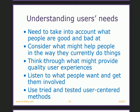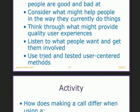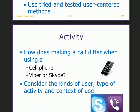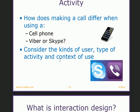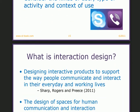Then we have understanding users, and an activity example: how does making a call differ when using a cell phone, Viber, or Skype? They're saying that using Viber and Skype is pretty much different from using a cell phone. Consider the kinds of user types, types of activity, context, and use.